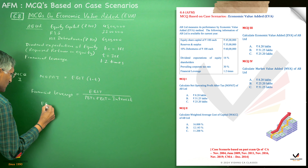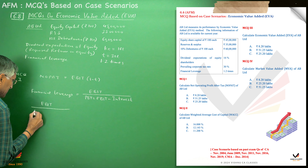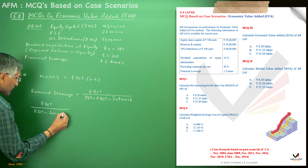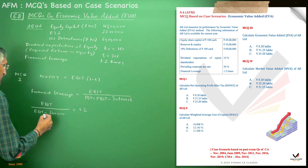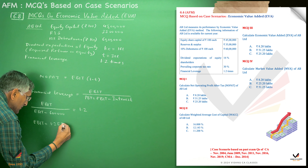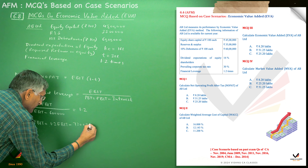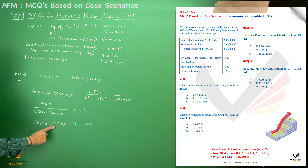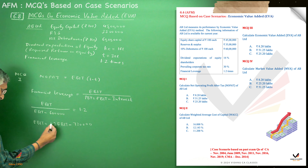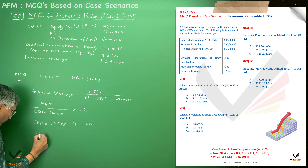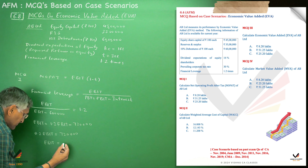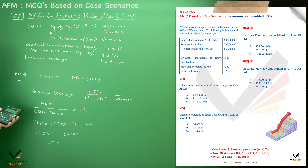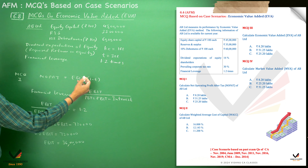Putting the values: EBIT / (EBIT minus 6 lakhs) = 1.2. Cross multiplying: EBIT = 1.2×EBIT minus 7.2 lakhs. So 1.2 EBIT minus EBIT equals 7.2 lakhs, giving 0.2×EBIT = 7.2 lakhs. Therefore EBIT = 7.2 lakhs divided by 0.2 = Rs 36 lakhs.